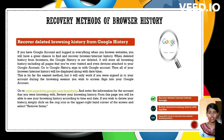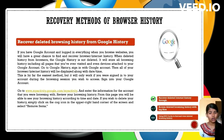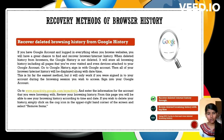The third method is recovering deleted browsing history from Google History. Using a Google account to recover browser history is effective if you are signed in during the browsing session. Google History retains all web activity including visited pages and devices used. To access this history, sign in to Google History where you can view and manage your web activity by date and time. If needed, you can delete specific items from your history using the settings option.